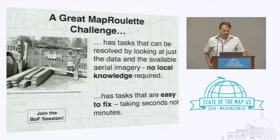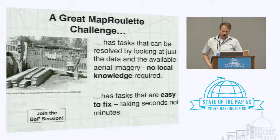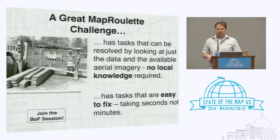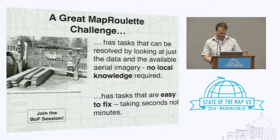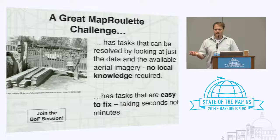Looking at those two challenges, what makes a great MapRoulette challenge? To my mind it's two things. First, it has tasks that can be resolved by looking at just the data and the available aerial images — no local knowledge required. It's an armchair tool where you just sit there and do your work. Second, it has tasks that are easy to fix, taking seconds and not minutes. Sometimes with the sharp angles challenge it can take minutes and you get distracted and keep fixing a bigger and bigger area — which is also good for OpenStreetMap, but it takes you out of the flow. Ideally MapRoulette should be: fix one thing, load the next thing — the roulette wheel keeps spinning.